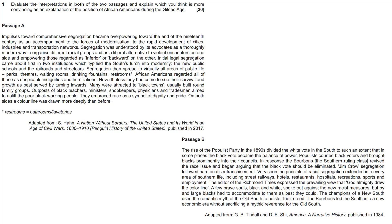Passage B: The rise of the Populist Party in the 1890s divided the white vote in the South to such an extent that in some places the black vote became a balance of power. Populists courted black voters and brought blacks prominently into their councils. In response, the Bourbons — the southern ruling class — revived the race issue and began arguing that the black vote should be eliminated. Jim Crow segregation followed hard on disenfranchisement. Very soon, the principle of racial segregation extended to every area of southern life, including street railways, hotels, restaurants, hospitals, recreation, sports, and employment.